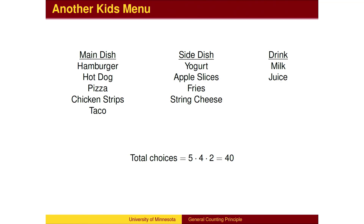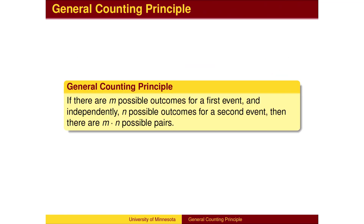We could add a fourth choice, and the same principle would apply — just multiply the choices at each stage. Here is the general counting principle: if there are m possible outcomes for a first event, and independently n possible outcomes for a second event, then there are m times n possible pairs.